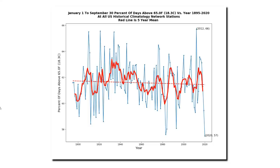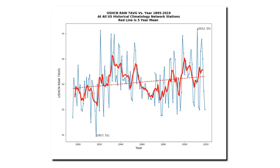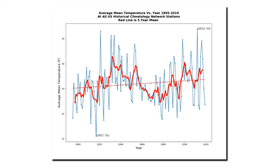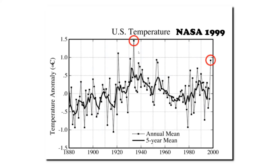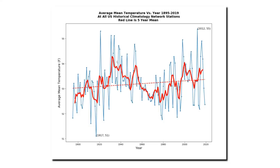This is very problematic for global warming alarmists, because the vast majority of high-quality data around the world is from the United States. Now let's look at the unadjusted average temperature around the United States — that's the average of minimum and maximum temperatures. Once again, you can see that the 1930s were warmer than the present. Not surprisingly, the unadjusted data looks very similar to the 1999 version of NASA U.S. temperatures. The current unadjusted NOAA temperature data shows cooling from the 1930s through the end of the 20th century.